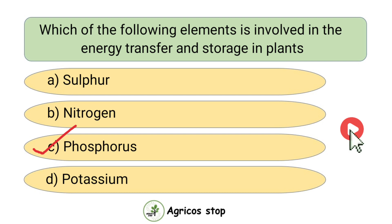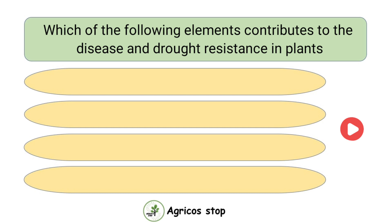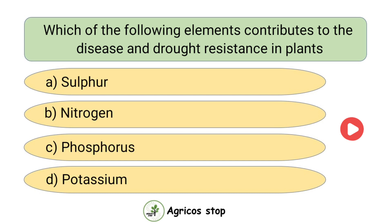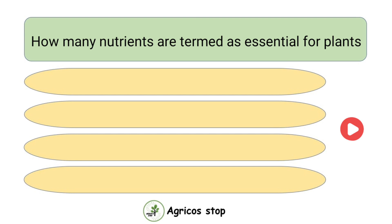Which of the following elements contributes to disease and drought resistance in plants? Options are Sulphur, Nitrogen, Phosphorus, and Potassium. The answer is Potassium. Potassium is the element that contributes to disease and drought resistance in plants.